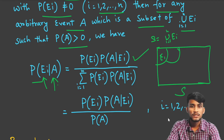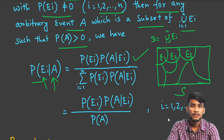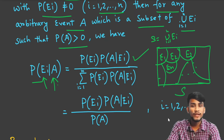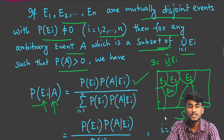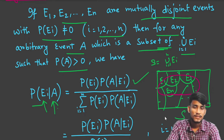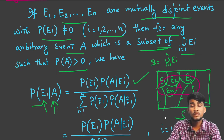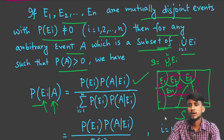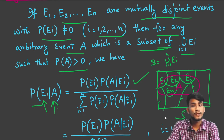Visually, suppose this is the complete sample space S, partitioned into events E1, E2, E3, and so on up to EN. If we define an event A which is a subset of this partition — meaning A overlaps with E1, E2, ..., EN — then we have to find the probability P(Ei|A), that is, given that event A has occurred, we find the probability of each Ei.